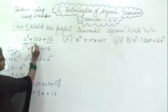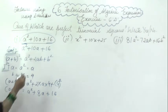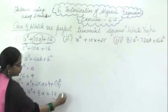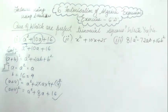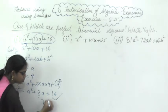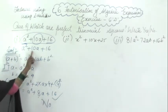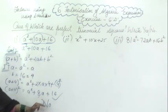But in the question it is given A square plus 10A plus 16. Here you are not getting 10A — the correct form gives 8A. So this is not a perfect polynomial square. For becoming a perfect square, instead of 10A it should be 8A. So this is not a perfect square — the answer is no.